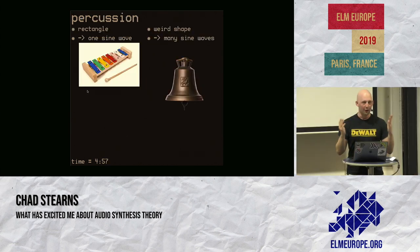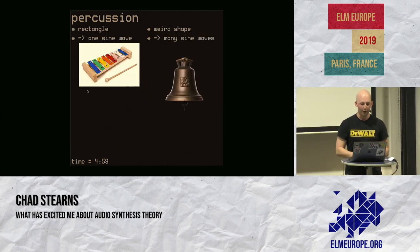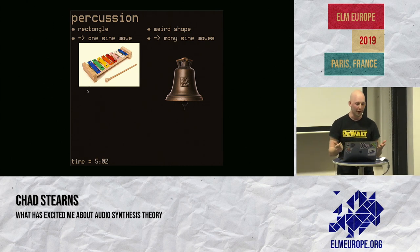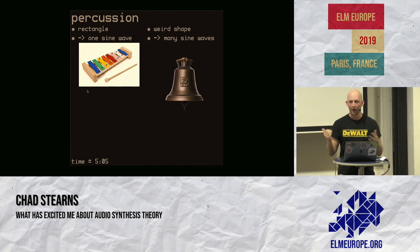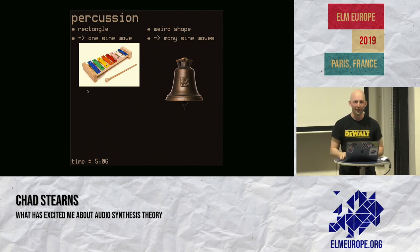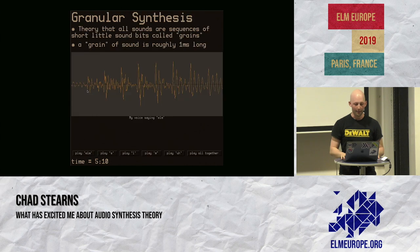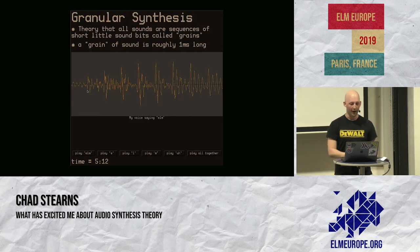I could tell this exact same story regarding percussion instruments. So like a xylophone or a metal bar — if you hit it, you generally get one sine wave. If you have a weird-shaped metal bar, like a church bell or a gong or a cymbal, you get like a whole package deal of sine waves. Okay, so that was my first theory.